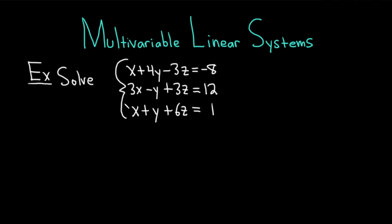Our example will be to solve a system of equations. We have three equations with three variables. First equation is x plus 4y minus 3z equals negative 8. Then we have 3x minus y plus 3z equals 12, and we have x plus y plus 6z equals 1.